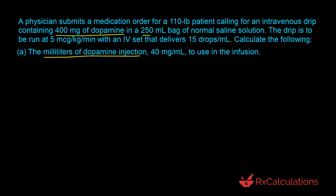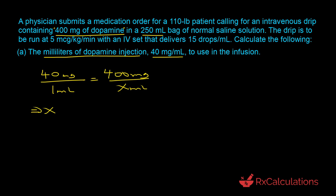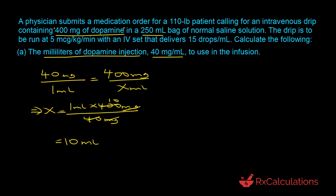To give you a physical picture: you have an IV bag of 250 milliliters and you want to put 400 milligrams of dopamine in it, using a solution from this injection. You take the concentration of the injection — 40 milligrams of dopamine per milliliter — and create a proportion. X equals 1 milliliter times 400 milligrams divided by 40 milligrams. The milligrams cancel out, giving 10. You will need 10 milliliters of the injection to provide the 400 milligrams of dopamine.